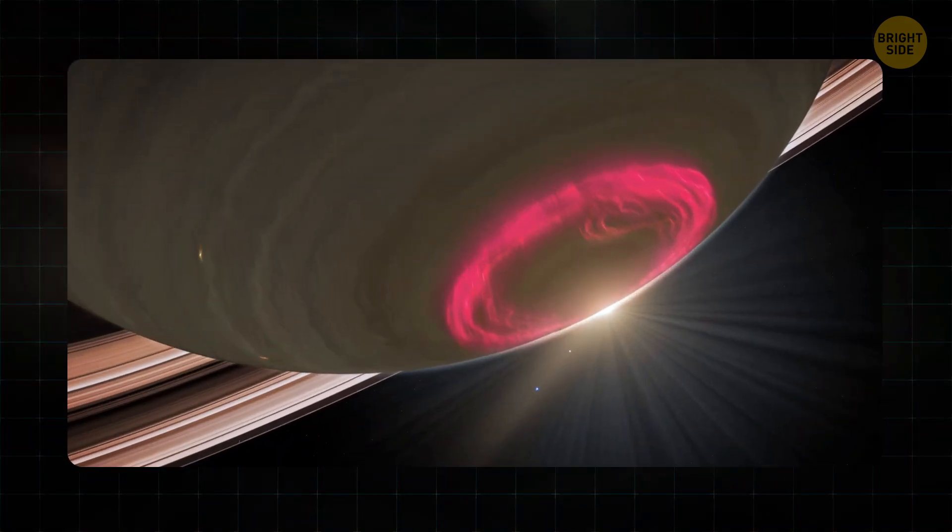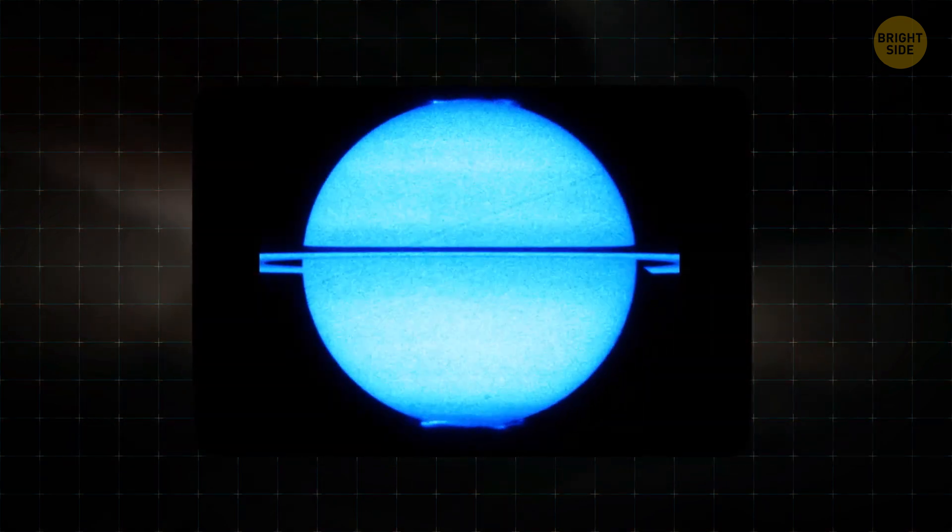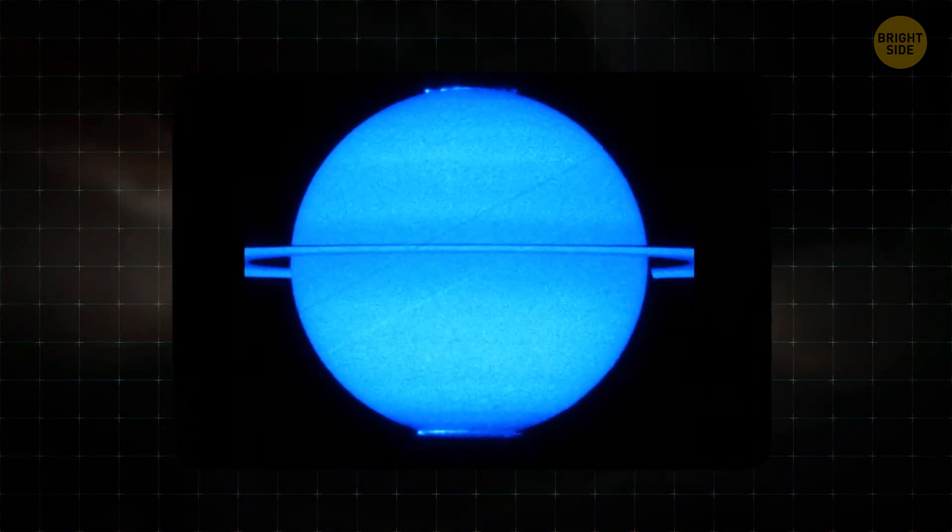Saturn's auroras, triggered by the planet's magnetic field, are located atop of the hexagon, giving its appearance a mystical vibe.